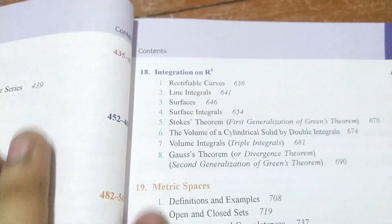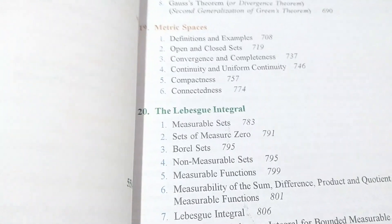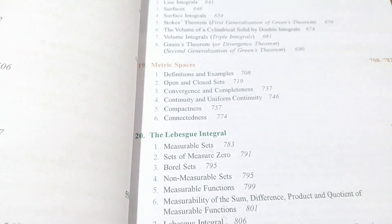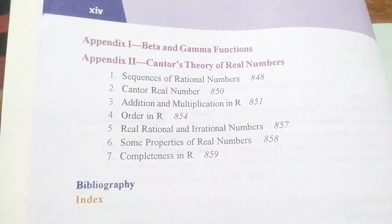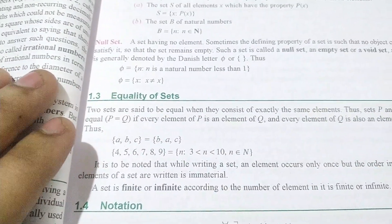The syllabus also includes topics from IIT JAM's integral calculus portion, then metric spaces and the Lebesgue integral with full topology of metric spaces. The appendix covers beta and gamma functions and Cantor's theory of real numbers. So this is a complete book for studying analysis. It is a multi-color edition — you will love to read it and will not feel bored.